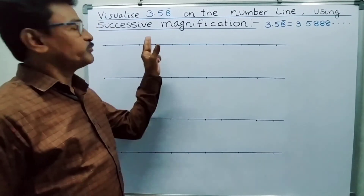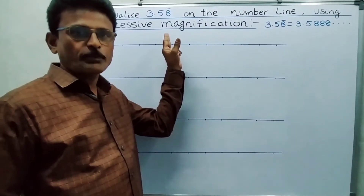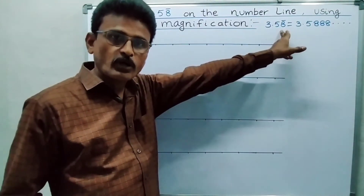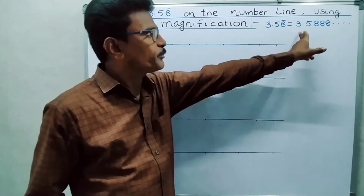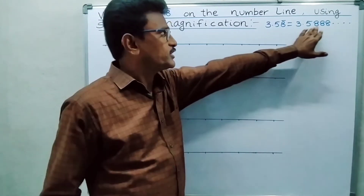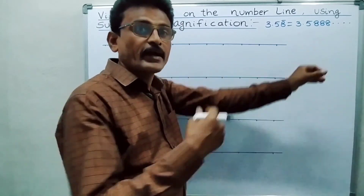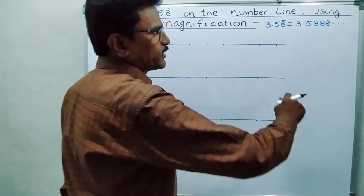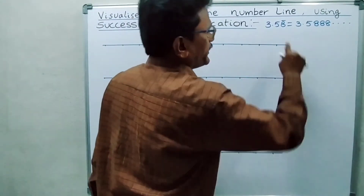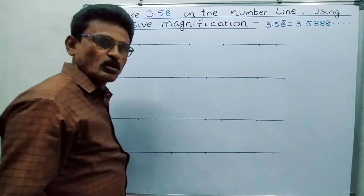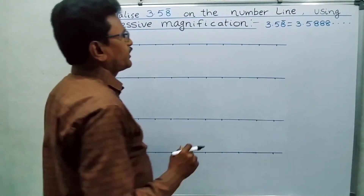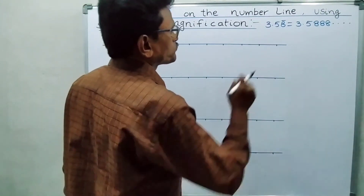Students, this time the number is 3.58 bar. 3.58 bar means 3.5888... — it is repeating. This is a non-terminating repeating decimal, and it is also a rational number. How to represent this on the number line?